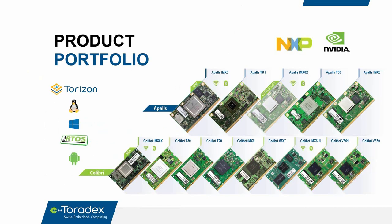We have two lines of system-on-modules: one called Apalis and the other called Colibri. Within each family the modules are pin-compatible, so you can scale from a single-core A7 to a multi-core A72 system. We mostly sell these modules but also focus heavily on software — we do a lot with the Yocto Project and provide Linux, and Android is available from third parties.